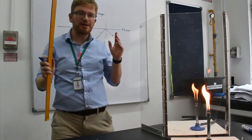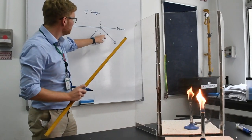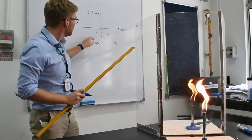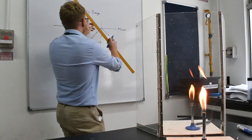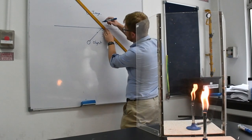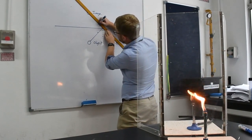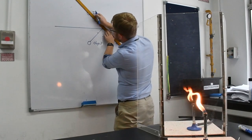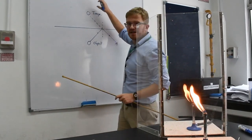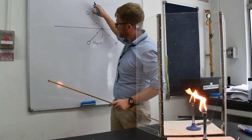And the important part of how images work is that my eye can't tell that the light has reflected. So from my eye's point of view, it appears as though the light has come from here, from the image inside the mirror.